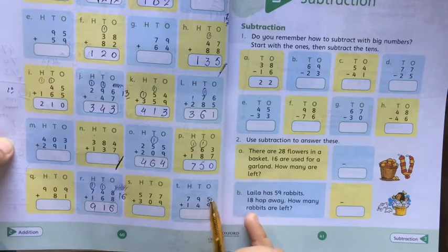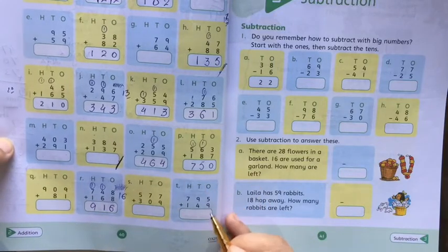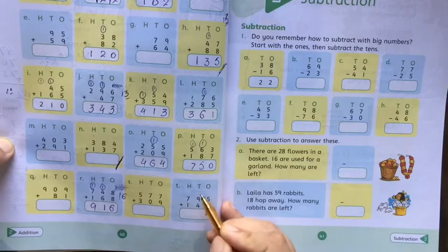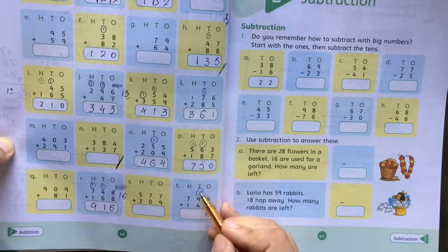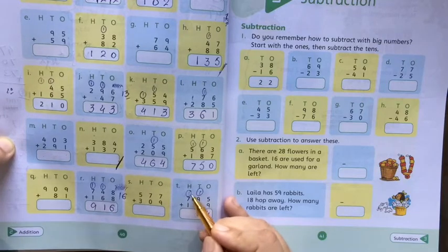One more I will show you, S and Q, those you have to do yourself, okay? 9 plus 5 equals 14, 1 carry goes. 9 plus 1 equals 10, 10 plus 4 again 14, 1 again carry. 7 plus 1 equals 8. 1 plus 9 equals 9.